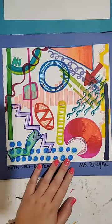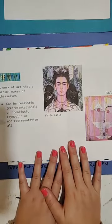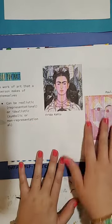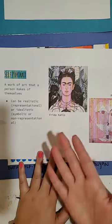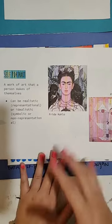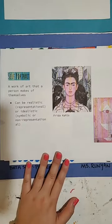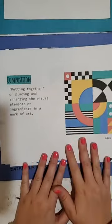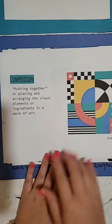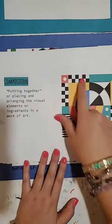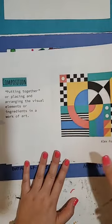We're using lots of form, shapes, colors, filling the space. What is a self-portrait? A self-portrait is a work of art that someone makes themselves. They can be realistic — something that really looks like you — or idealistic or symbolic, something that doesn't look like you but represents you in a way. And that's what we're going to be focusing on. The other topic we're going to cover today is composition — thinking about putting things together, placing and arranging our visual elements, where our shapes are going to go, color choices, which direction they go, filling the space. Those are our three main topics.